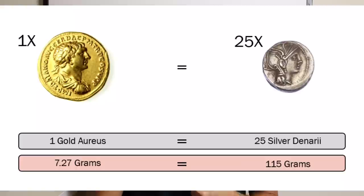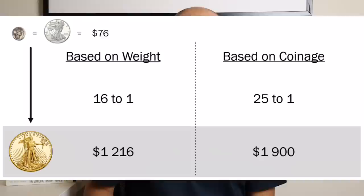Depending on how you want to look at it, if we agree that the $76 is an accurate estimate of the value of one ounce of silver based on Roman pricing, then gold would look something like this. Based solely on the weight difference between the coins, you can see here on the left that it would be a 16 to 1 ratio between gold and silver, and that would value gold at around $1,216 per ounce in today's dollar terms. But if we base it on the coinage, which is how I prefer to do it as it is the norm I have established in the analysis, you get a true value of gold today at $1,900 per ounce using my methodology.